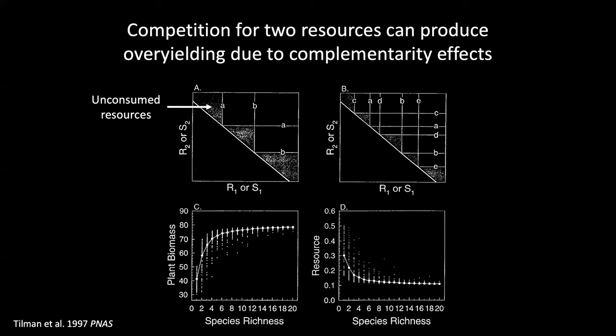For example, if there's competition for two resources, and if species exhibit a trade-off for the two essential resources, and if there's a heterogeneous environment with different ratios of these two resources, then a species is competitively superior at some but not all ratios. Thus, the two species can coexist, including at different places in this heterogeneous environment. Additional species can invade, further decrease resource concentrations, and increase biomass if they can exploit unconsumed resources.